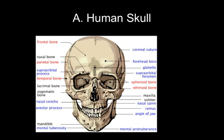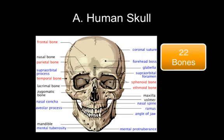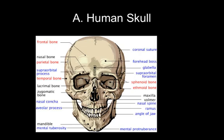Looking at the skull, there are 22 bones in all. Only one of them actually moves — as you might know, it's the mandible, or the jawbone. The skull itself is divided into two subdivisions: the cranial region, which houses and protects the brain, and the facial region, which supports the muscles and features of the face, such as the eyes, the nose, and the mouth.